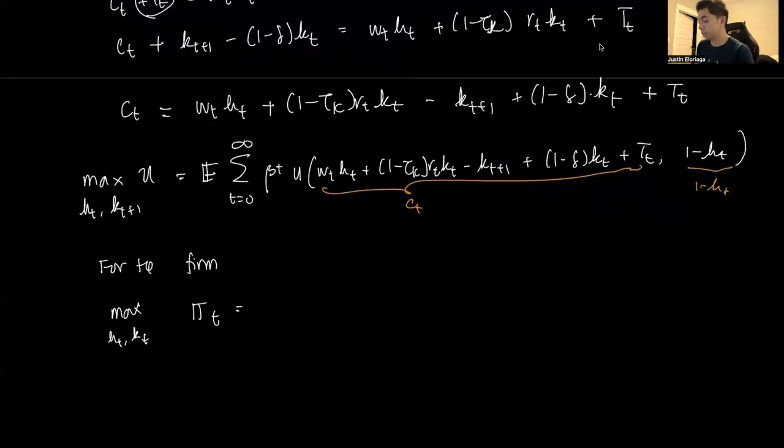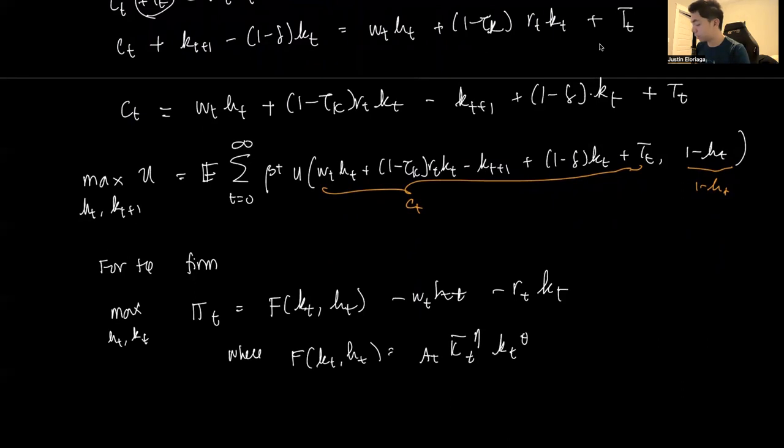So that's profit is equal to the production function F of Kt, Ht minus Wt Ht minus Rt Kt. Now labor cost and rental cost is a cost for the firm, but it's an income to the consumer, where this F of Kt, Ht is equal to At, Kt bar to the eta, Kt theta, Ht 1 minus theta.